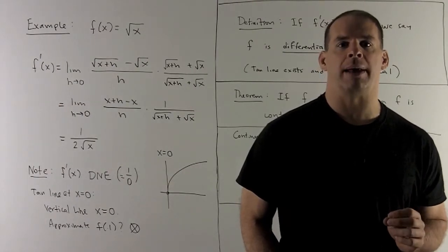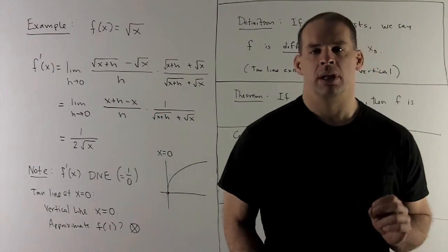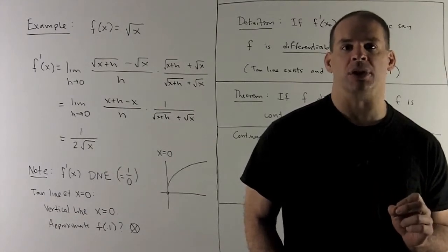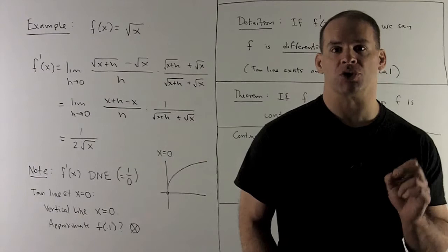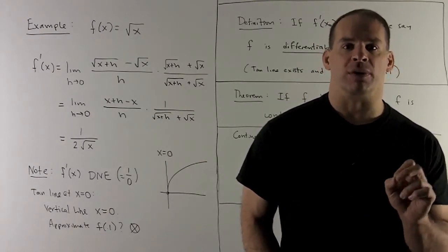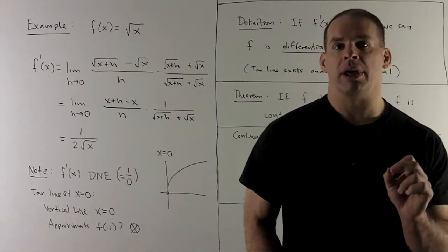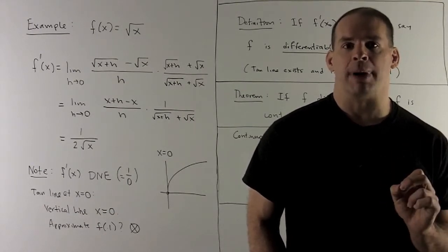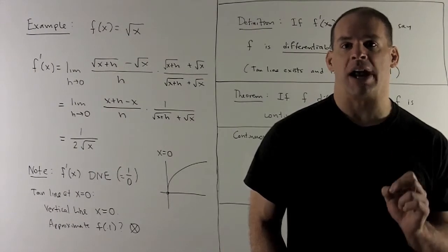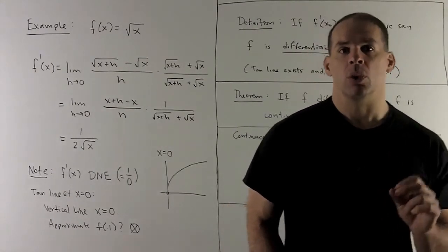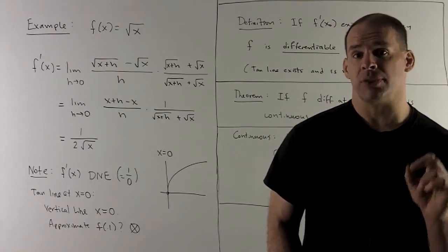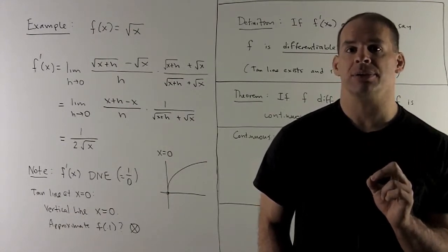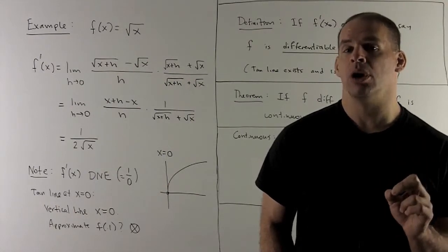For a slightly different example, let's take f(x) = √x. Then f(x+h) = √(x+h), and f(x) = √x, so our Δy is √(x+h) − √x. Taking the limit of that over h gives 0/0 — an indeterminate form — so we use the old trick of multiplying top and bottom by (√(x+h) + √x). The top collapses to h, the h's cancel, leaving 1/(√(x+h) + √x). Letting h go to zero gives 1/(2√x).